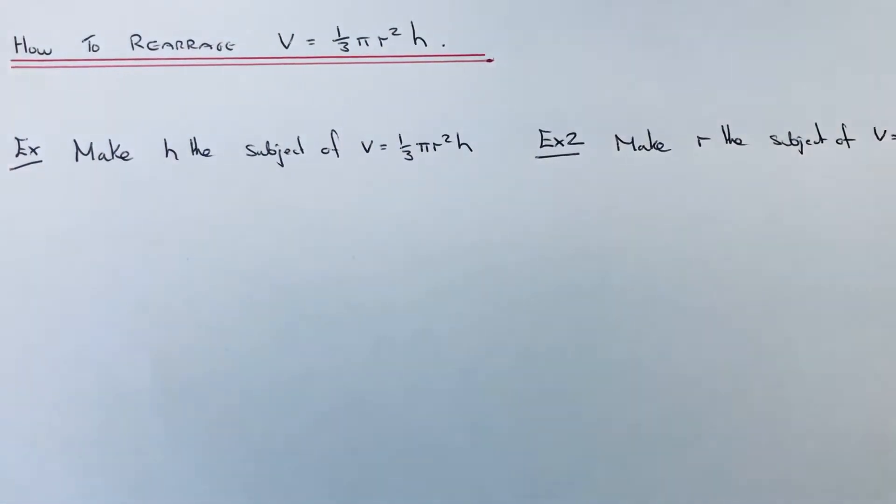Hi guys, welcome back. This is Maths 3000. Today I'm going to show you how to rearrange the formula V = 1/3 πr²h, which is used to work out the volume of a cone.